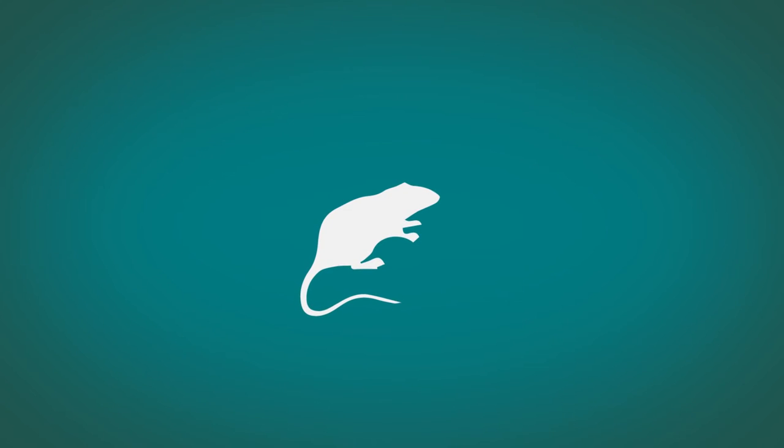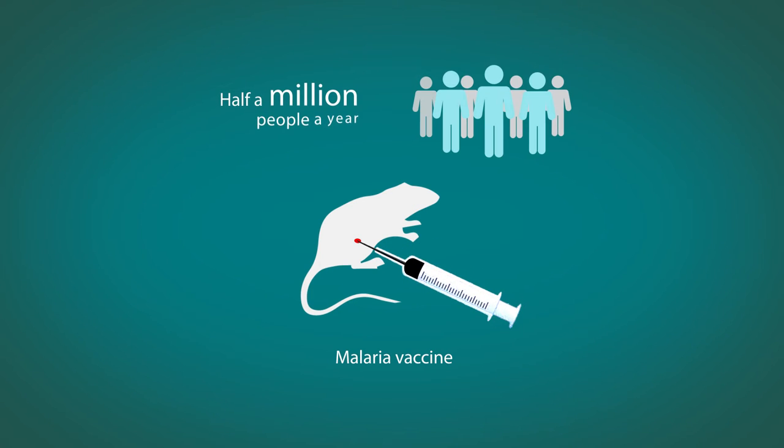Specially bred mice have also allowed us to test that a vaccine for malaria, which kills more than half a million people a year, doesn't damage human organs.